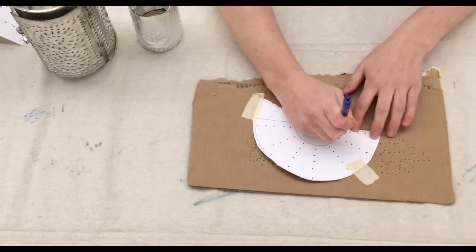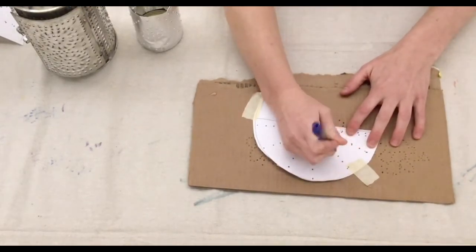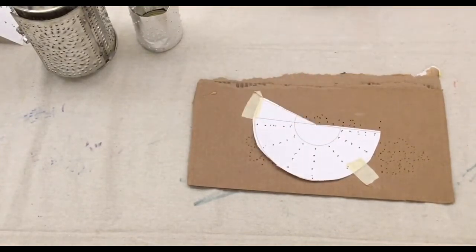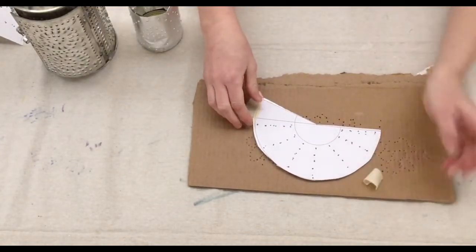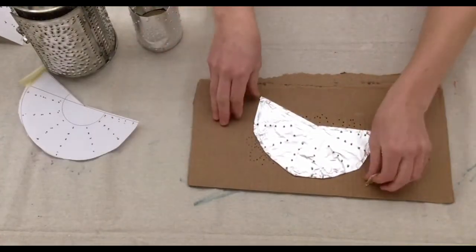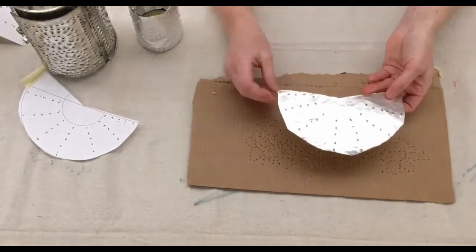I grab my pen again and just start punching holes. All right, let's take a look at how it came out. I'm just going to remove this template and take a look at our punched lid.